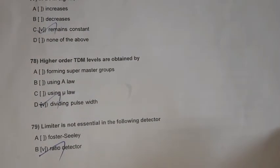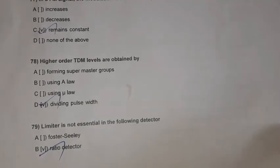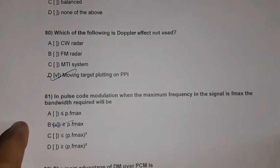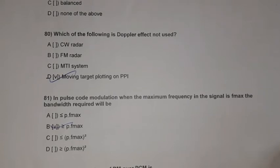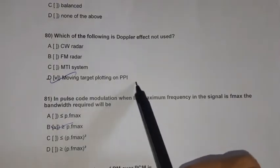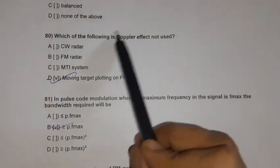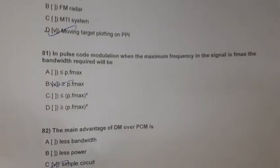Question 79: A limiter is not essential in the following detector — ratio detector. Question 80: For which of the following is Doppler effect not used? The answer is moving target plotting on PPA.